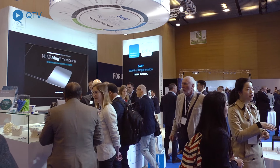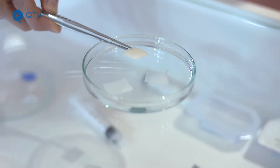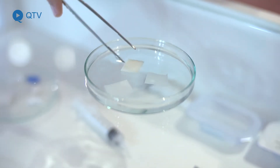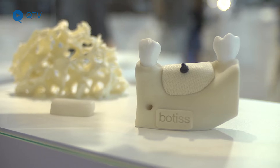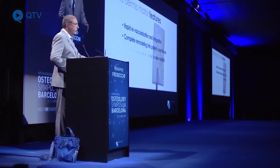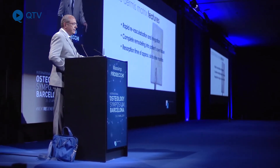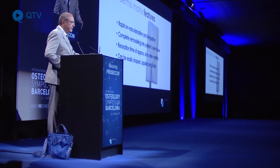Talking about soft tissue, the gold standard is certainly connective tissue from the patient — from the palate or from the tuberosity — because it provides good proliferation and keratinization. However, very often we cannot use just this approach because we need more quantity, or because the patient's conditions are not ideal for a double surgery. So in many cases we can use porcine dermis matrix, which helps to get more material, more volume, and more stability of the soft tissue. These two classes — hard tissue and soft tissue biomaterials — have become very important in my practice.